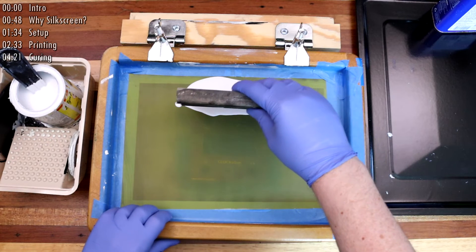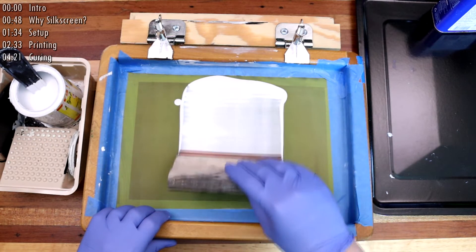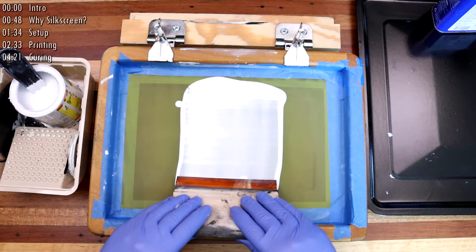To me, the most important part of doing the print is the flood stroke. Without applying any pressure, I draw the squeegee over the art and coat it in a thin layer of ink.